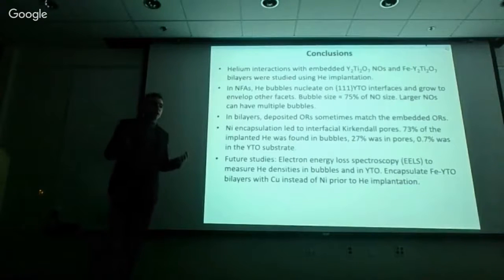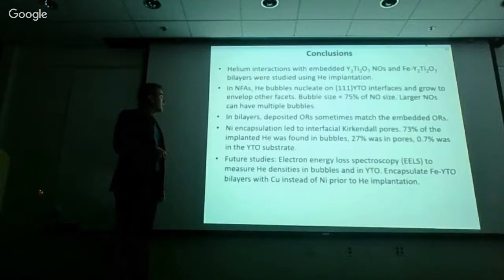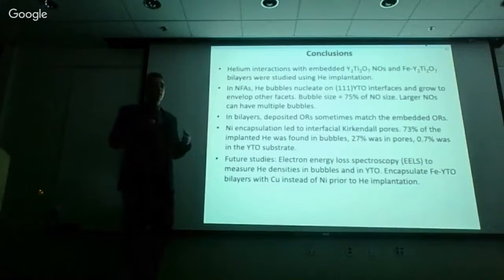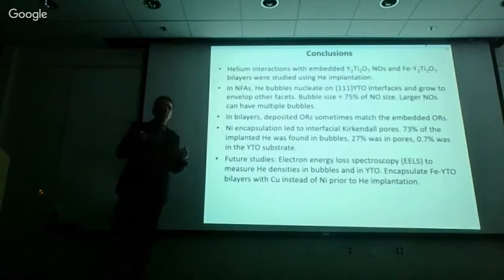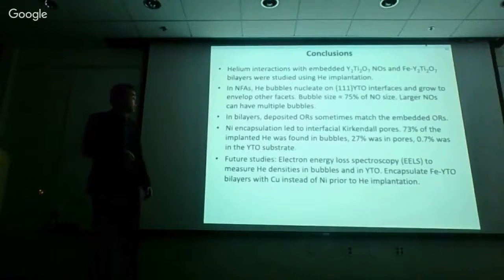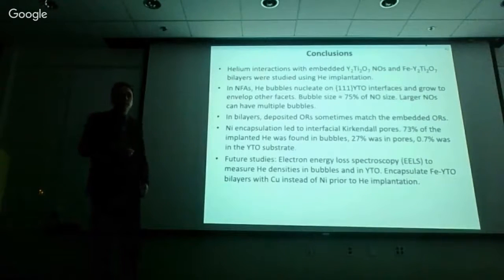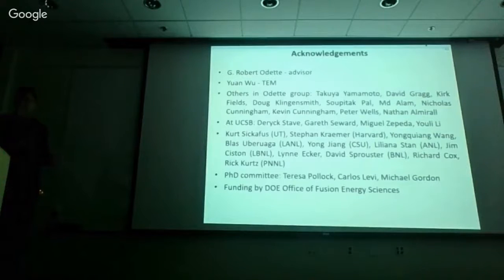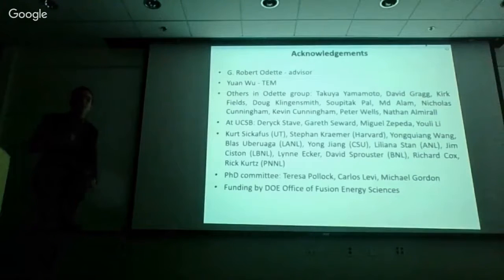In conclusion, we studied helium interactions with embedded nano-oxides and with iron/Y₂Ti₂O₇ bilayers through helium implantation. For the nanostructured ferritic alloys, helium bubbles nucleate on 111-type interfaces and grow to envelop other oxide facets; bubble sizes reach about 75% of the nano-oxide size; and larger nano-oxides can have multiple bubbles. In the bilayers, deposited orientation relationships sometimes match the embedded ones and sometimes don't. For the bilayer implantation, nickel encapsulation led to interfacial Kirkendall pores; 73% of helium was found in metallic bubbles, 27% in the pores, and about 0.7% in the oxide substrate. Future studies include electron energy loss spectroscopy to measure helium densities in bubbles and oxides, and a new set of bilayers encapsulated with copper instead of nickel to avoid the Kirkendall effect.